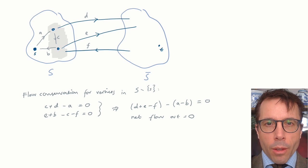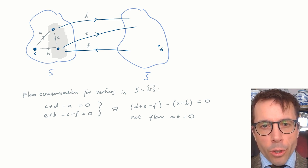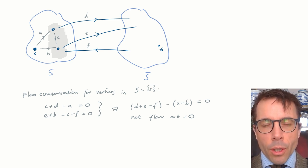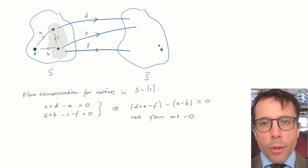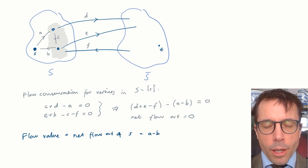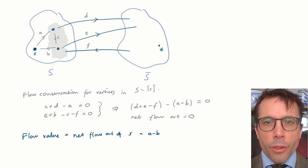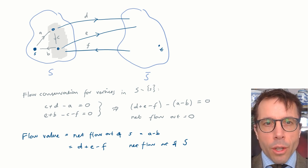And if I write down the flow conservation equation for those two vertices, this is what I get. Now, I'm just going to add those two equations together. The c term cancels out and what we're left with can be written like this. This equation says that the net amount of flow out of these shaded vertices, in other words, the net amount going towards S bar minus the net amount coming in from the source, is equal to zero. In other words, what we've got here is an equation that relates the net flow leaving the source, a minus b, to the net flow crossing the cut, d plus e minus f.